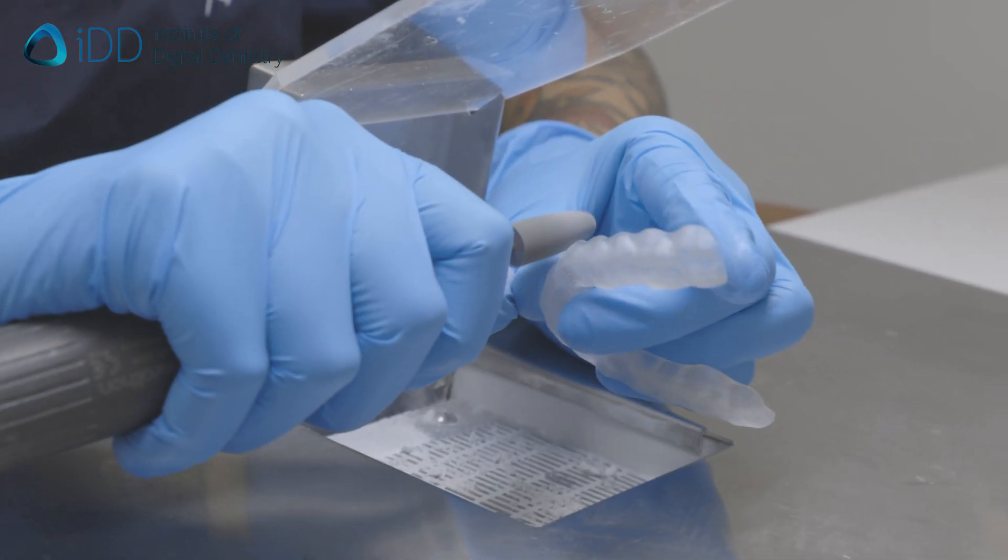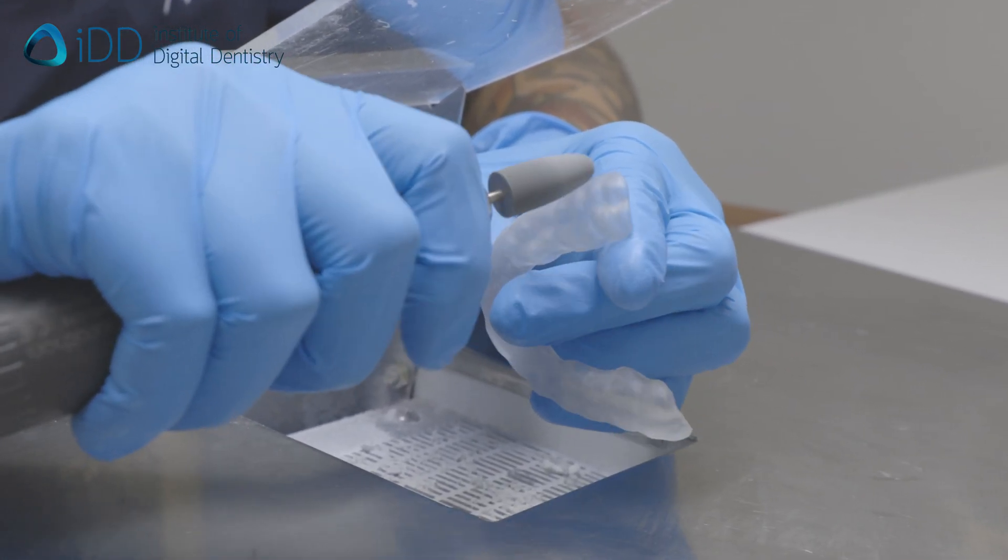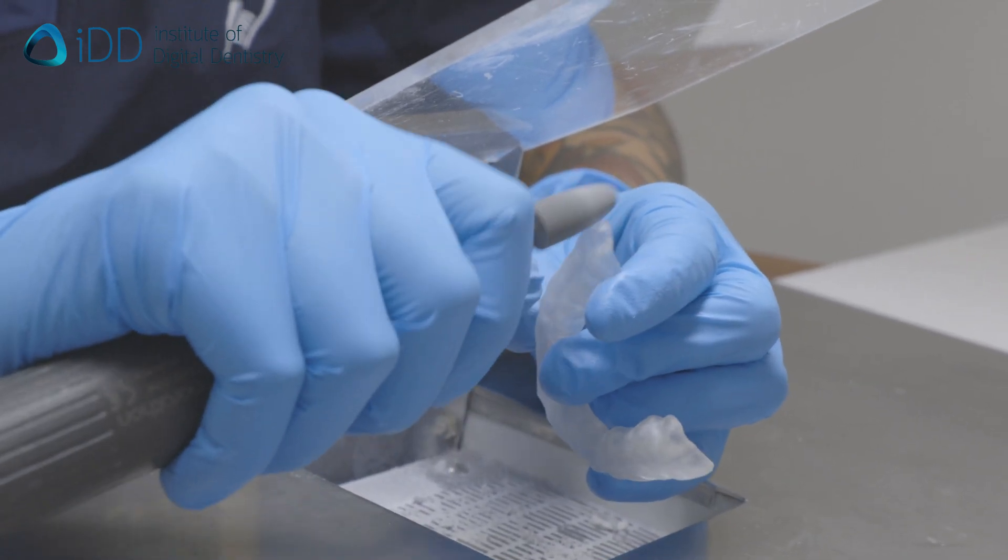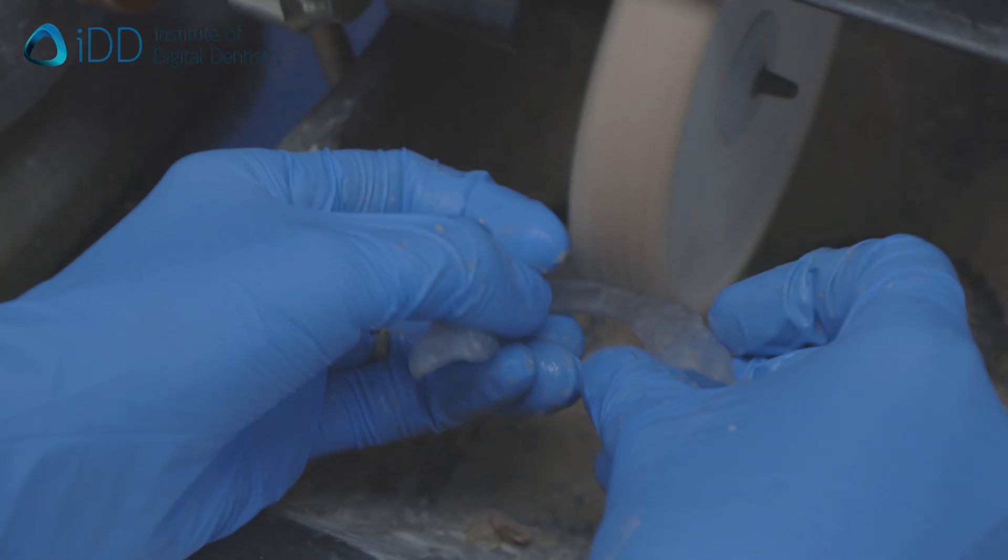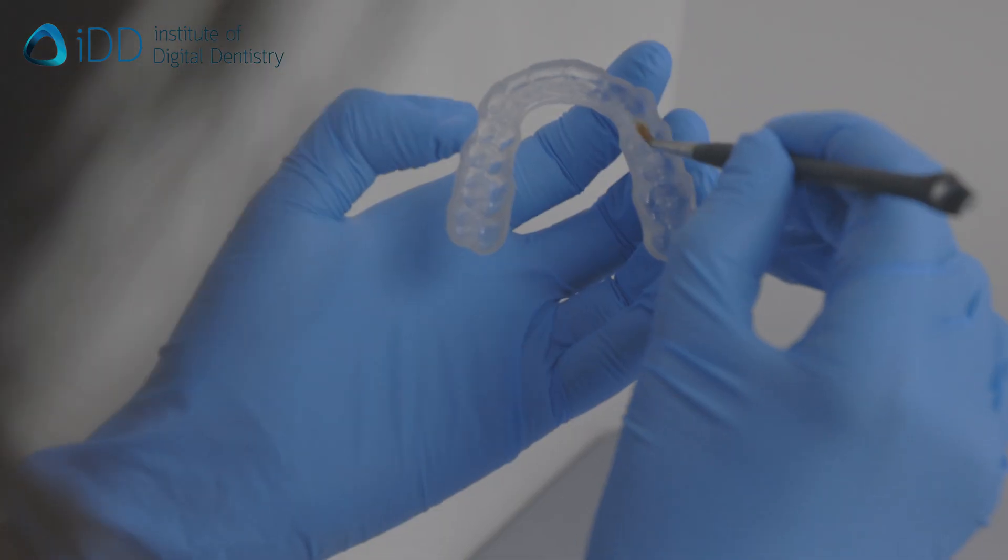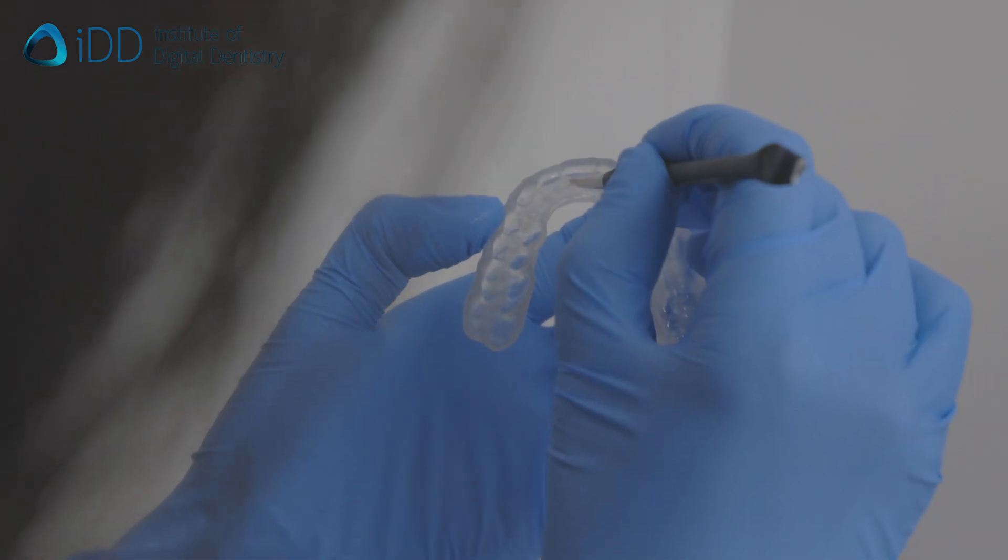Remove any irregularities on the surface by using silicone burrs and polishers. Make the surface of the splint as smooth as possible by polishing it. Then add an extra layer of the same resin to the surface and cure it.